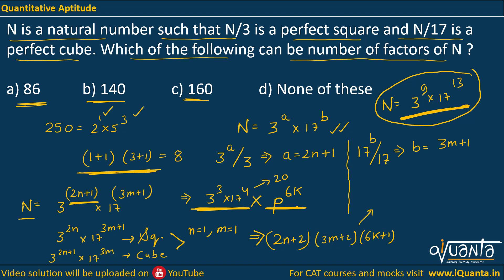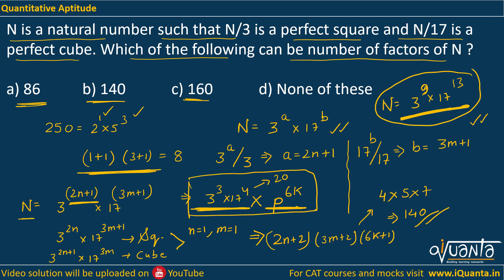Putting n = 1, m = 1, k = 1 gives (4)(5)(7) = 140. This is an acceptable case — note that while 3⁹ × 17¹³ also gives 140 factors, it does not satisfy the given conditions. This number does satisfy all conditions, so option B (140) is the correct answer. Always cross-check that all conditions are satisfied at the end.